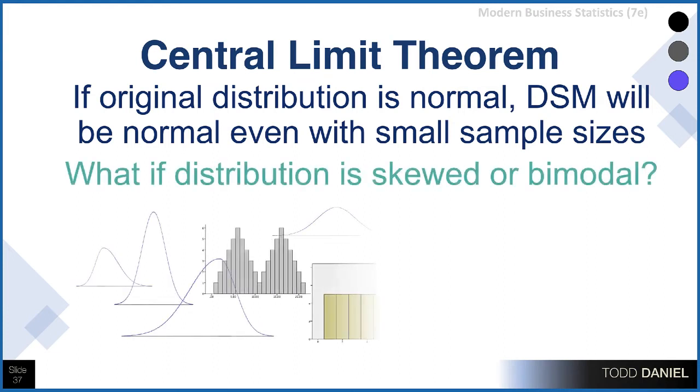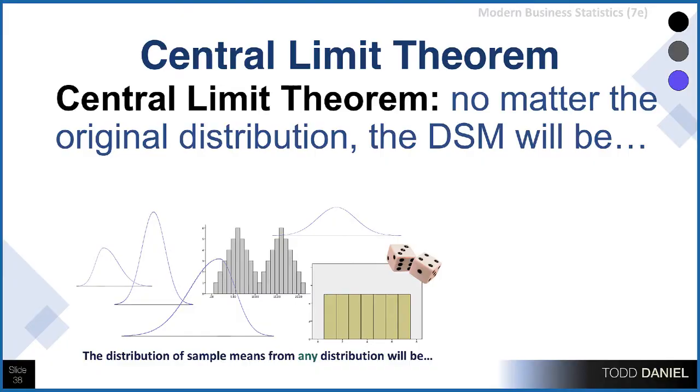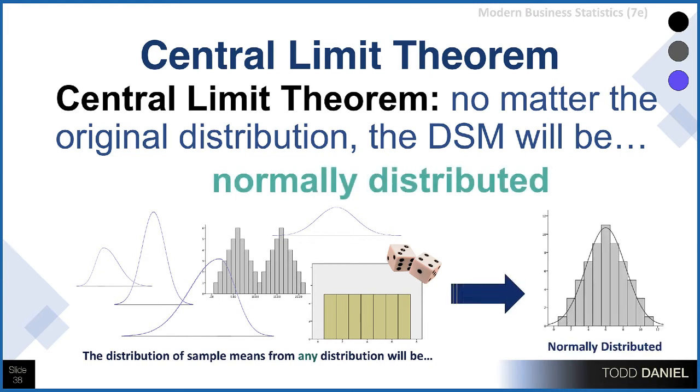But what if your population distribution is not normal? What if it's skewed, has a great deal of kurtosis, or is a uniform distribution where every case has the same probability of being selected? If the distribution is highly skewed, you might expect all your samples to be highly skewed, and the distribution of sample means would be highly skewed. But what the central limit theorem shows us is that no matter the original distribution, the distribution of sample means will be normally distributed.